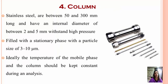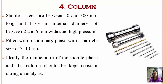The fourth component is the column. It is made of stainless steel, and there are a variety of columns available that can withstand higher pressure and temperature. They are 50 to 300 mm long with an inner diameter of 2 to 5 mm. These columns can withstand high pressure and are filled with a stationary phase of 3 to 10 micrometers inside. Ideally, the temperature of the mobile phase and column should be kept constant during analysis.